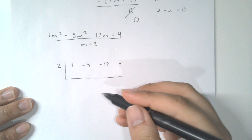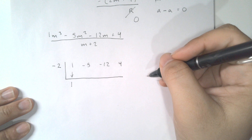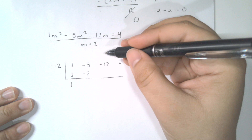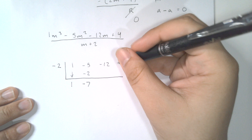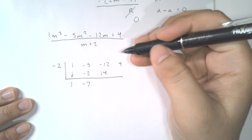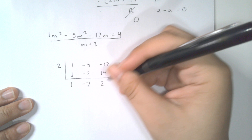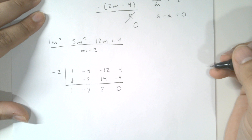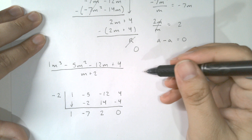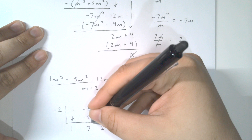We bring down the first number, which is 1. Then multiply -2 times 1 to get -2, and add: -5 + (-2) = -7. Then -2 times -7 = +14, and -12 + 14 = 2. Then -2 times 2 = -4, and 4 + (-4) = 0. So our resulting numbers are 1, -7, 2, and 0.